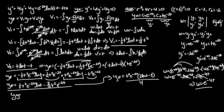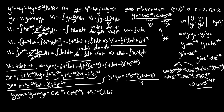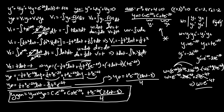The general solution is y = y_h + y_p, giving y = c₁e^(-2t) + c₂te^(-2t) + t²e^(-2t)·(2·ln(t) - 3)/4. That's everything — I hope this made sense. If it did, please like and subscribe, and I'll see you in the next video.